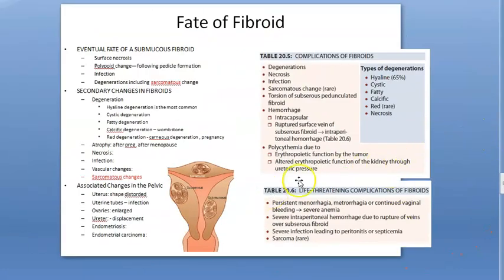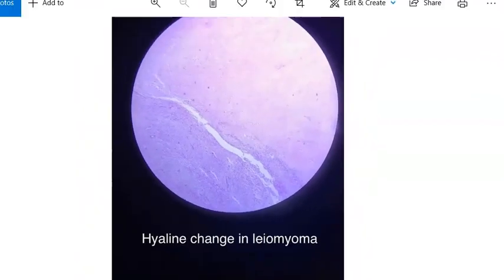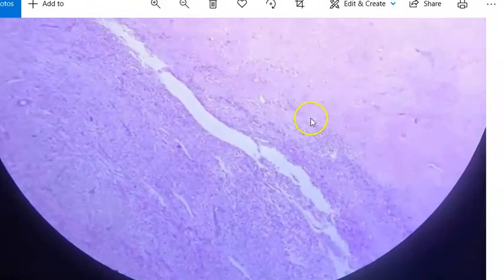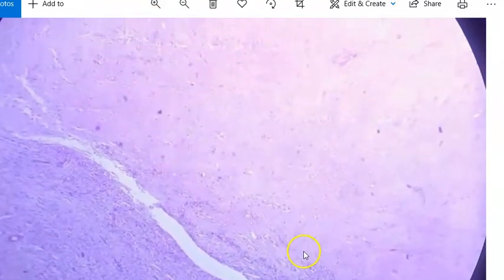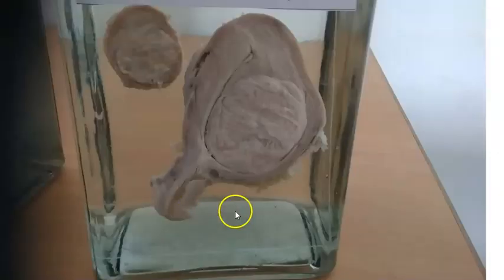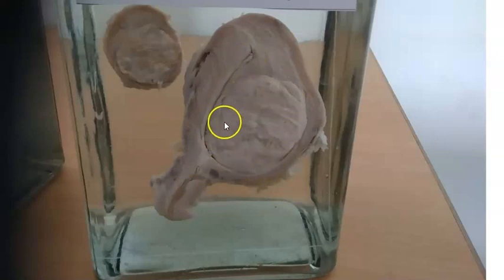Here you can see the hyaline change in leiomyoma. Here's the gross specimen of leiomyoma — you can see the cervix, the uterine cavity, and the intramural leiomyoma clearly.